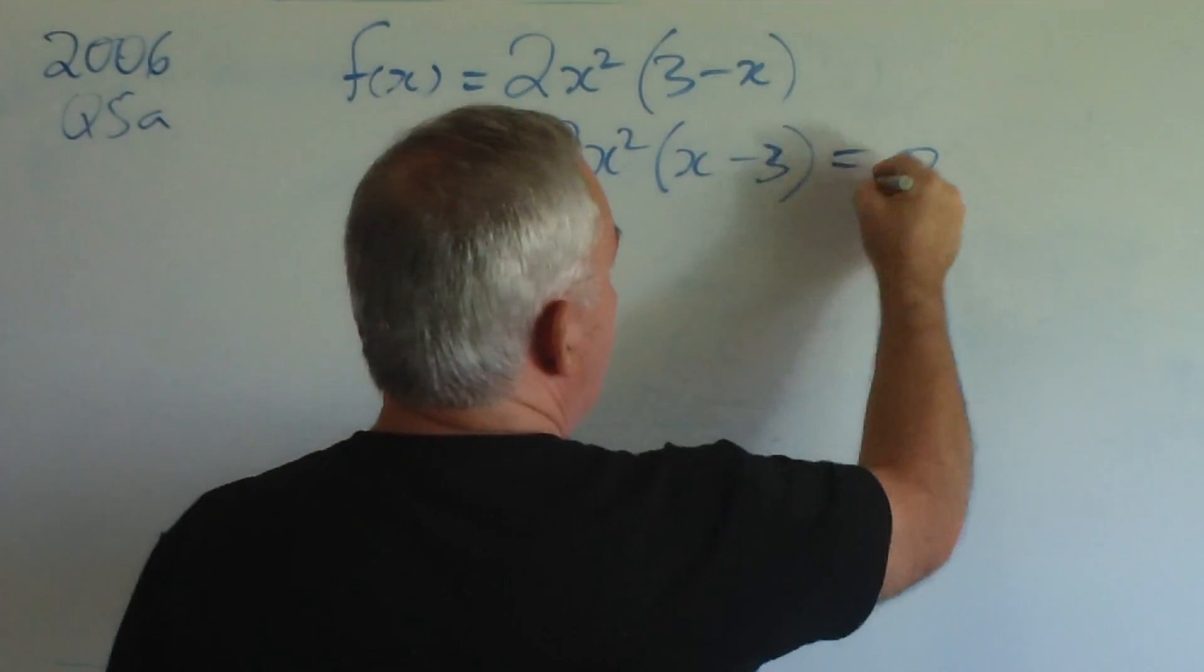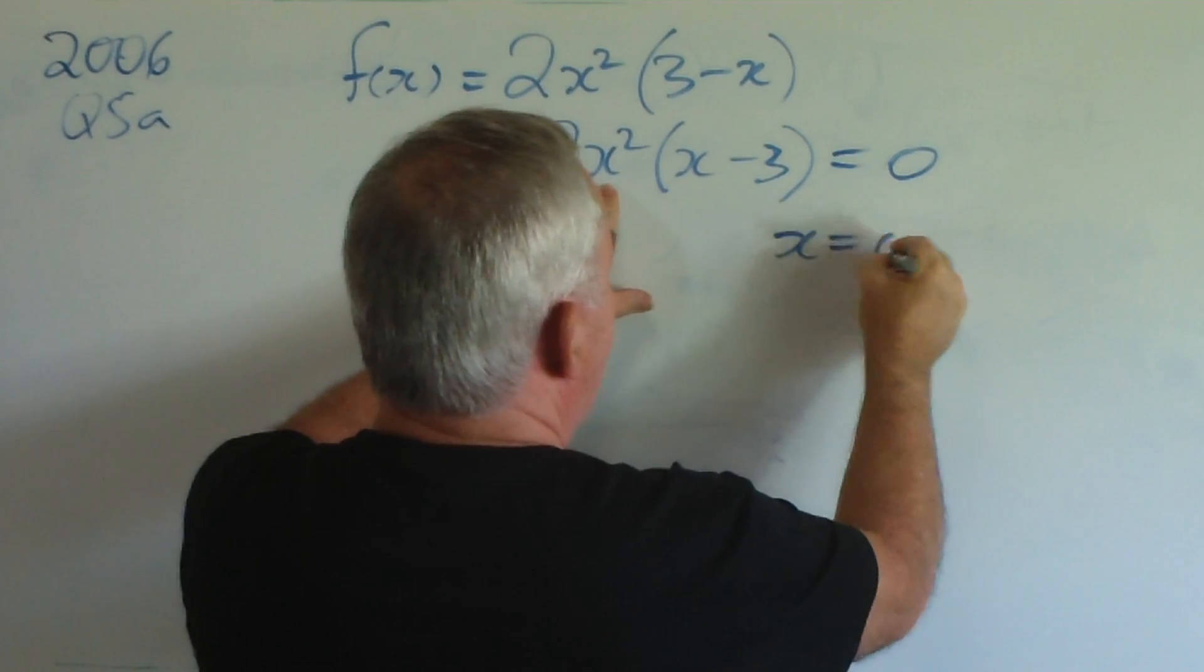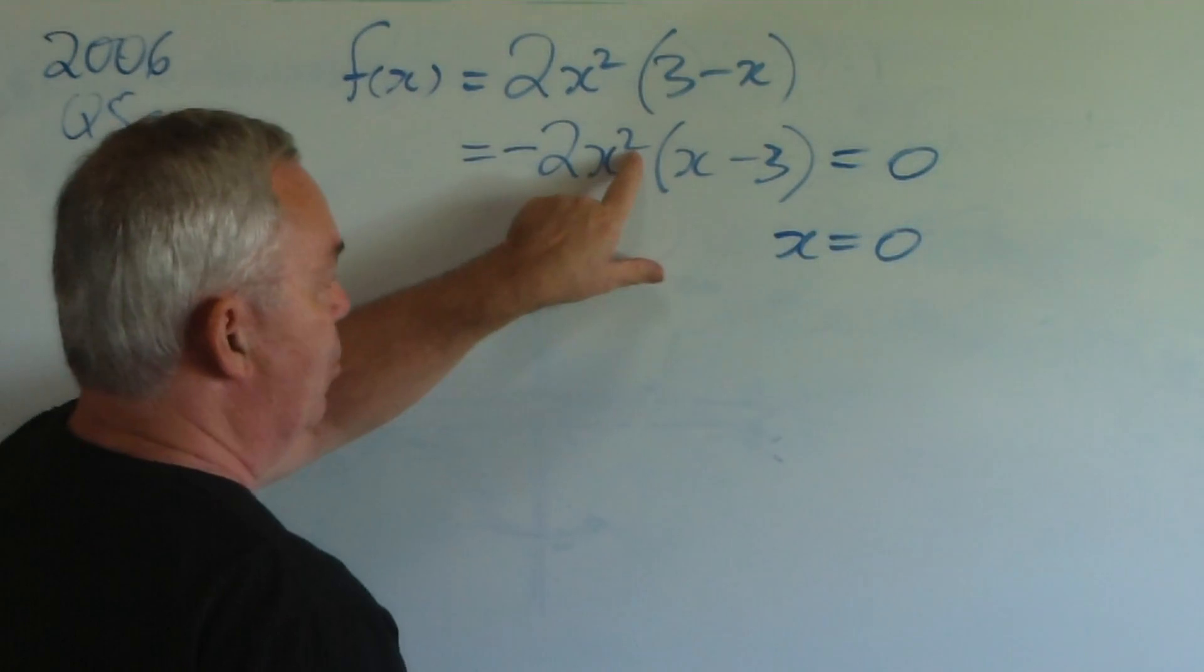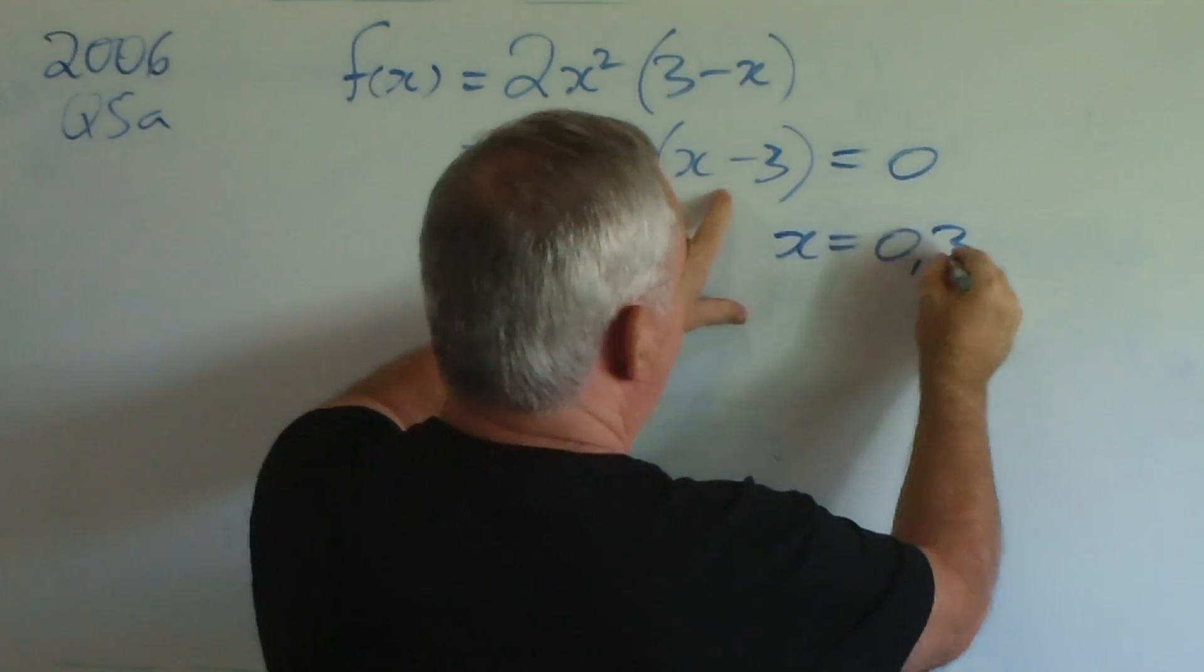We set it equal to zero for the roots, and we have x equals zero is one root. It's there twice. It's a double root. And we have another root at three.